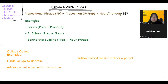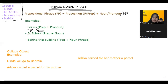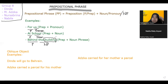So what are the examples of prepositional phrase? The first is 'for us,' where 'for' is the preposition and 'us' is the pronoun. The second example is 'at school,' where 'at' is the preposition and 'school' is the noun. Last but not least, 'behind this building' — 'behind' is the preposition, and 'this building' is a noun phrase, while the word 'building' itself is a noun. So there are three examples using a noun, pronoun, and noun phrase.